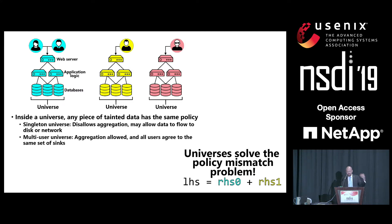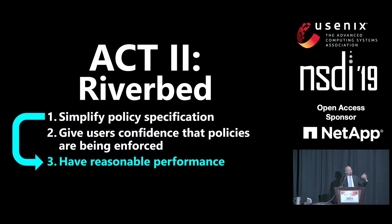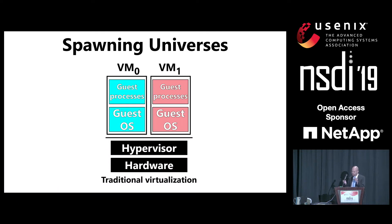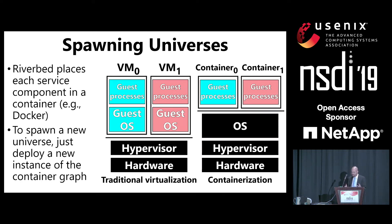The universe mechanism might have some downsides — for example, there might be a lot of universes, and won't all of these be difficult to manage efficiently? Riverbed could try placing each service component inside a traditional virtual machine, but the problem is that each VM has to contain a guest operating system in addition to application-level code, so cloning a new universe would require cloning multiple heavyweight VMs. Instead, Riverbed places each service component in a container, where the same OS is shared by each container. Cloning, suspending, and resuming a container becomes much more efficient because containers have less state than a heavyweight VM. So in Riverbed, spawning a new universe means deploying a new instance of the container graph.